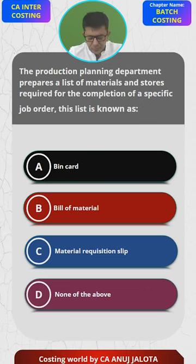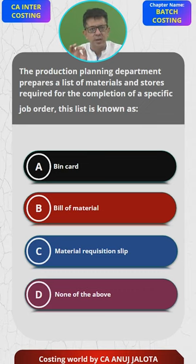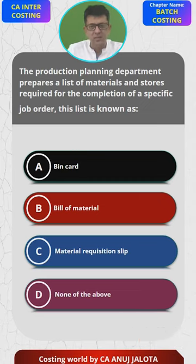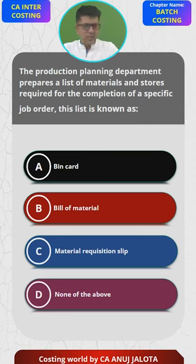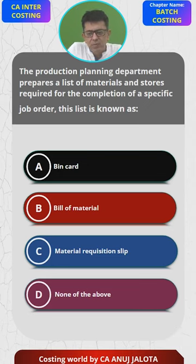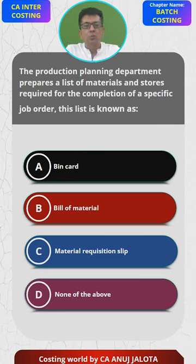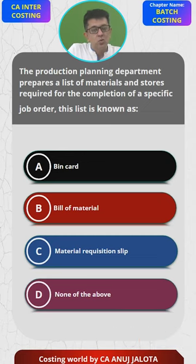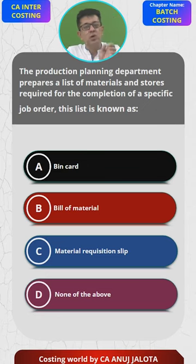The question is: whenever you get any job, you try to prepare a list of what all materials are required for that job. That bill or that list is called what? A cannot be the answer — it is like a store ledger control account but only on a quantitative basis. B is bill of material — that should be the answer. Bill of material is basically, suppose you told the carpenter that I want this kind of a wardrobe. For this wardrobe, what all materials will be required — that list of materials is called the bill of material.